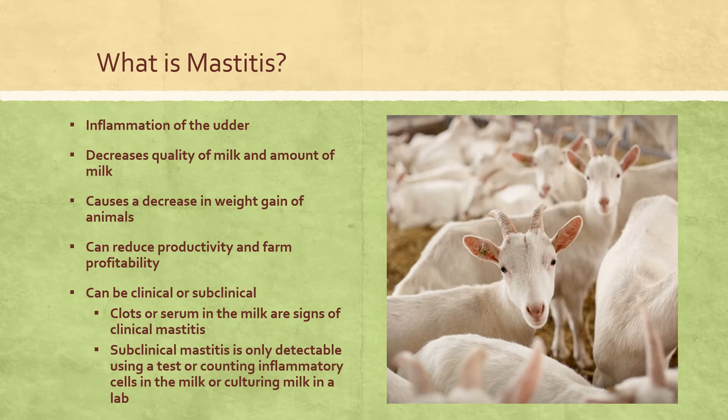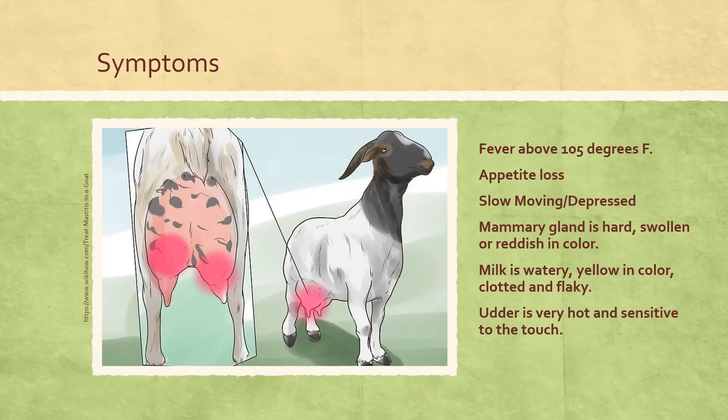You have to watch out for teat damage. Teats can be damaged as a result of over-milking, poorly maintained milking machinery, rough removal of clusters, getting teats caught on wire outdoors, or biting by babies. Teat damage can allow bacteria to enter the teat canal, which can lead to mastitis.